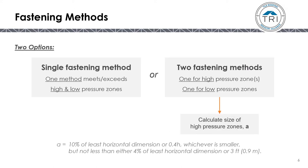When looking at the whole roof and the roof zones, there are two options. The first option is the single-fastening method, where you use one fastening method for the entire roof that meets or exceeds both the high and low-pressure zones. The other method is the two-fastening method, where you use one method for the high-pressure zones and another for the low-pressure zones. To do this, you need to calculate the size of the high-pressure zone using the formula for A, covered in another class.